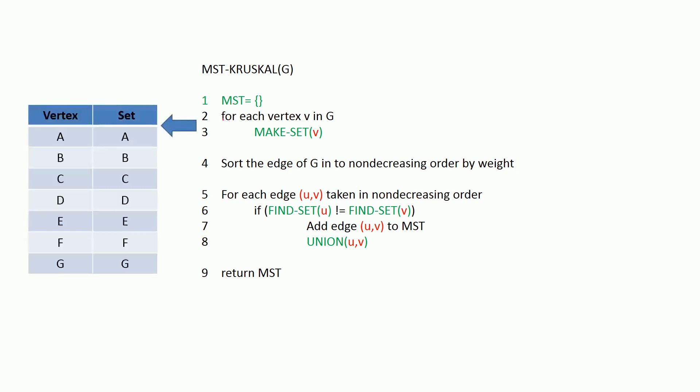The outcome of lines 2 and 3 will be the table shown on the left side. And then we are going to sort all the edges in this graph in non-decreasing order because we are giving priority to pick the remaining minimum weighted edge. The outcome of line 4 will be a list as shown on the right side which contains the edges in sorted order from minimum to maximum.